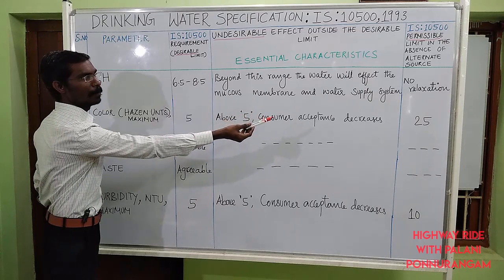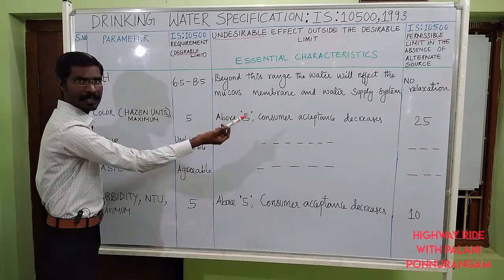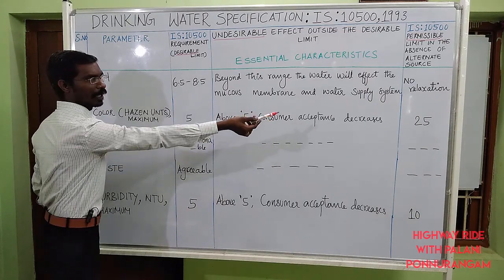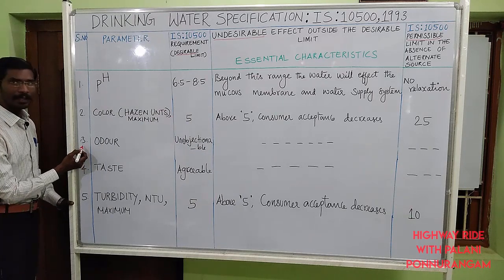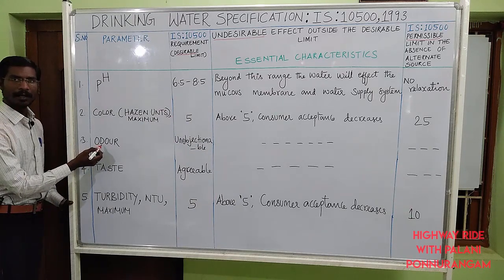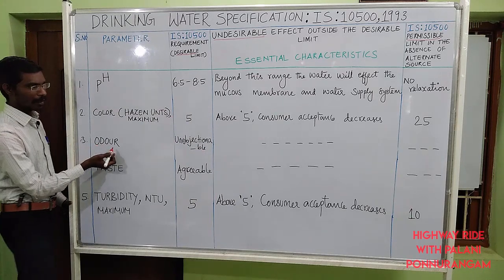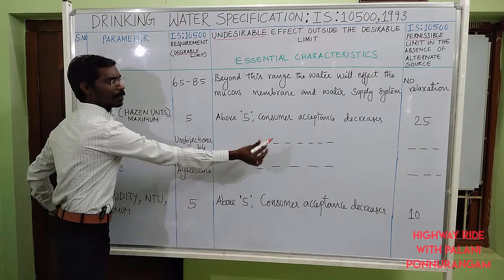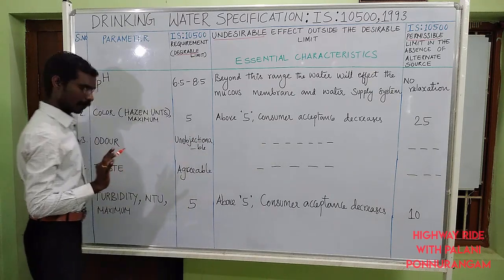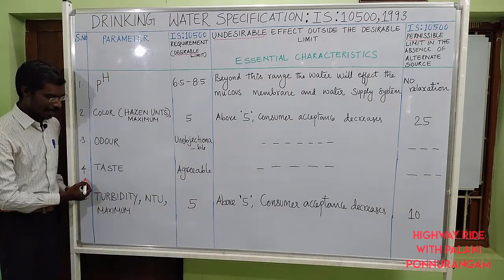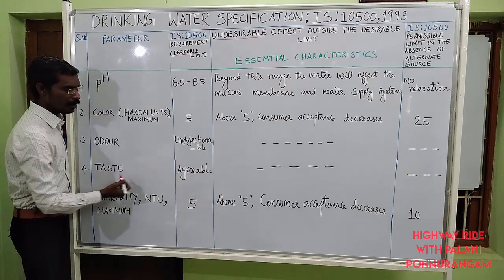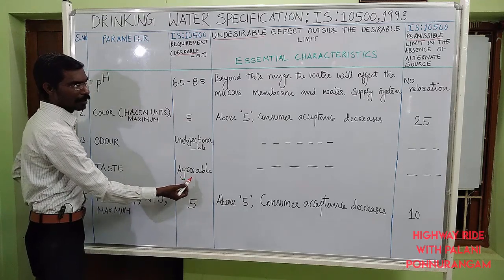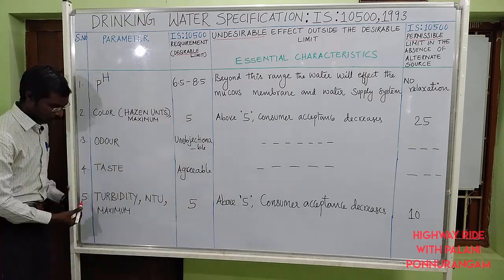The maximum permissible limit in the absence of alternate source is 25. The third standard is odor — odor should be unobjectionable, and there is no permissible limit. The fourth standard is taste — taste should be agreeable, and there is no permissible limit.